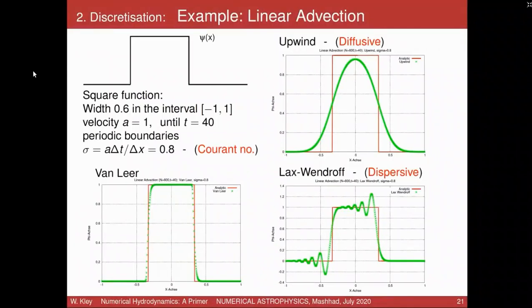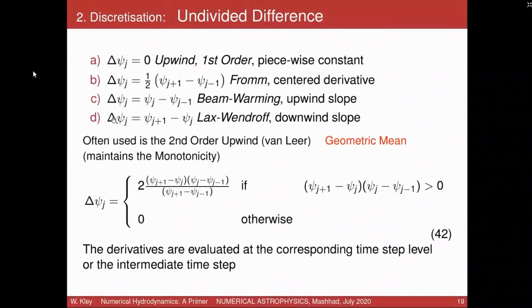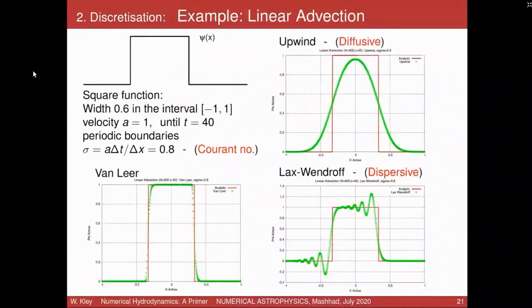There is a question about time complexity — I guess of these slopes. These are only spatial slopes: the delta_psi_j is only a spatially variable quantity. All the values on the right-hand side are all at the same time step N, the known time step. You always choose the variables at the known time step; the time derivative is only on the left-hand side.